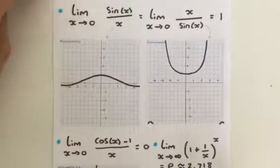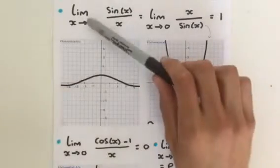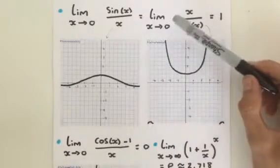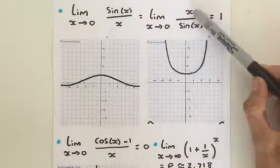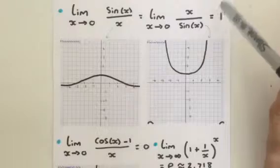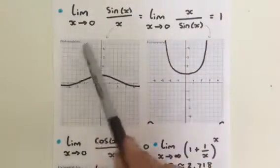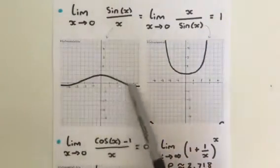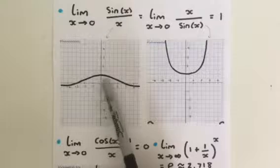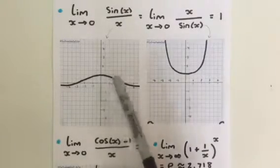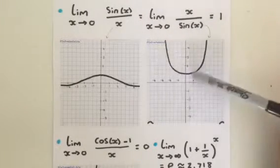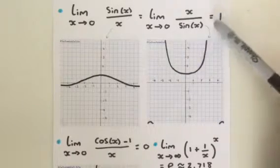Next, the limit as x approaches zero of sin(x) over x is equal to one. Looking at the graph of sin(x)/x, it has a nice curve, and as x approaches zero, the limit equals one — that's the y value. Similarly, for the function x over sin(x), as x approaches zero from either side, the limit is one as well.